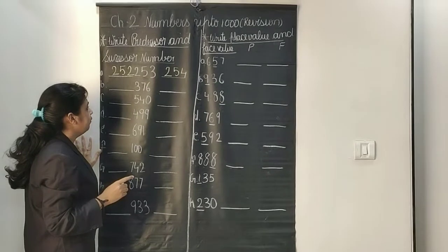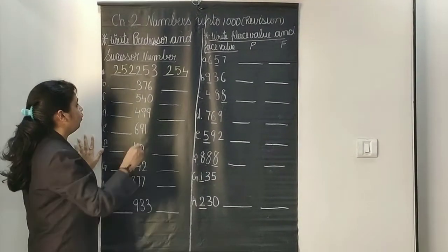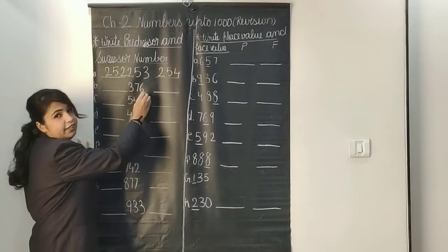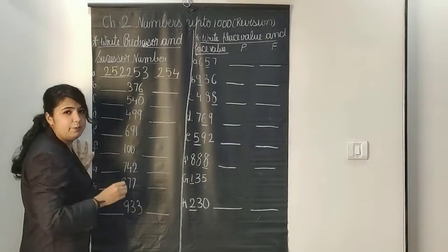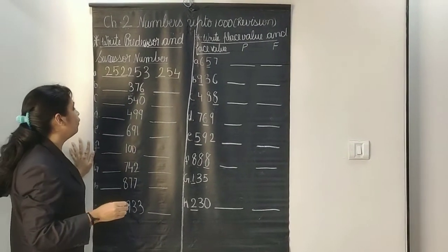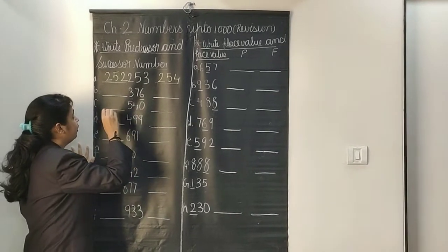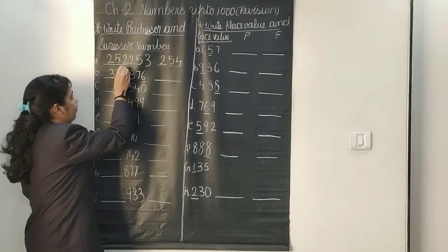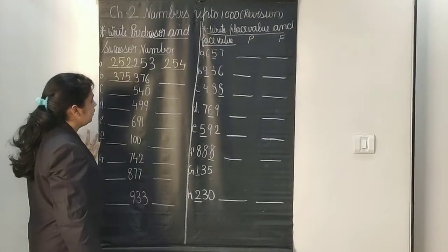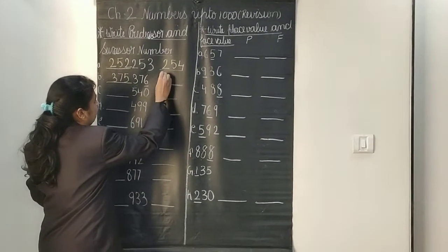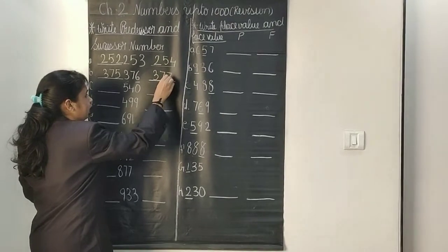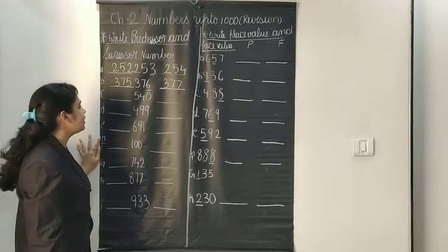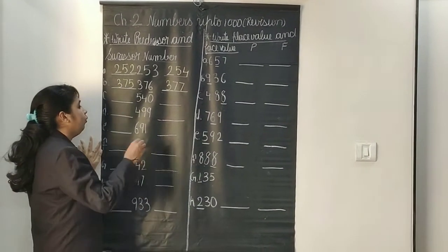The next number is 536. We will check the number at the ones place. The number at the ones place in 376 is 6, so the predecessor number of 376 is 375, and the successor of 376 is 377.